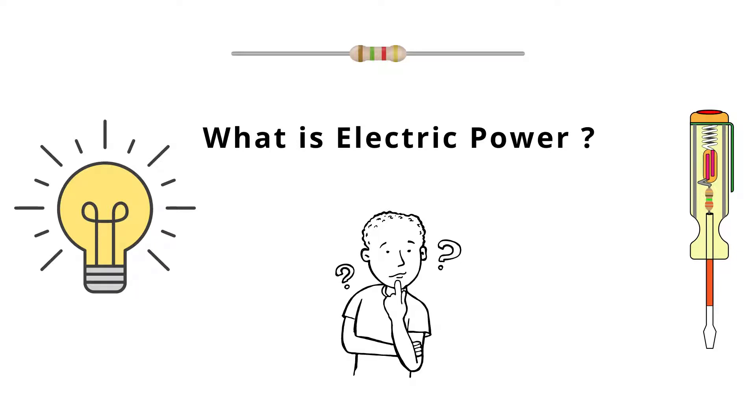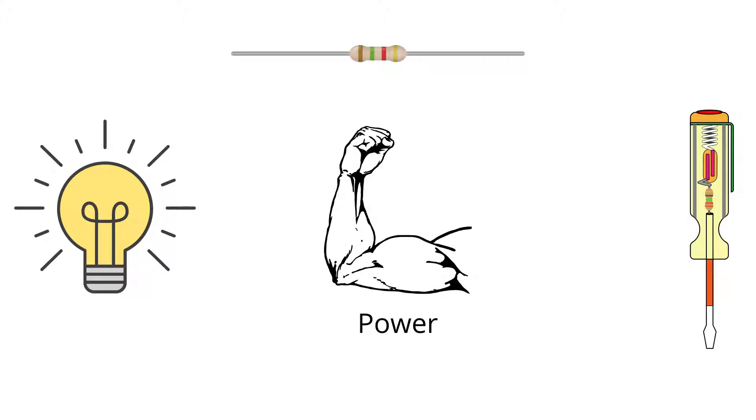Hey everyone, welcome to my channel Electric. Today we will be learning about what electrical power is and its relationship with current and voltage. Power, as we know from a physical point of view, is the rate of doing work—that is, work done per unit time.